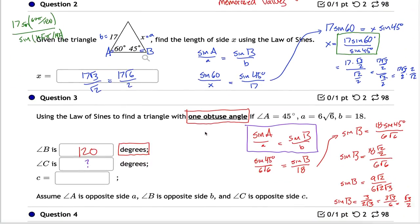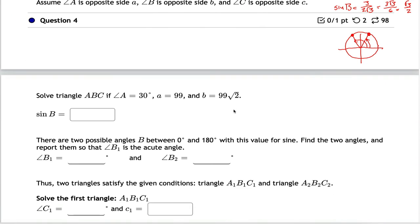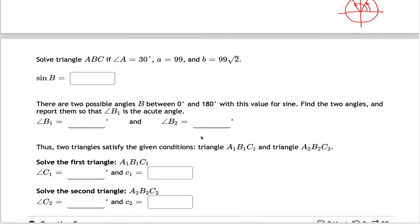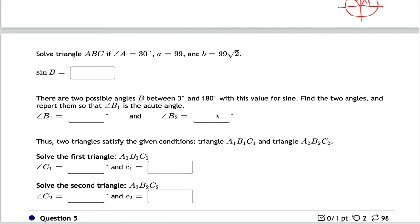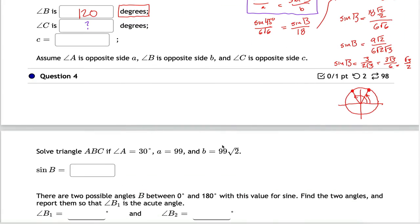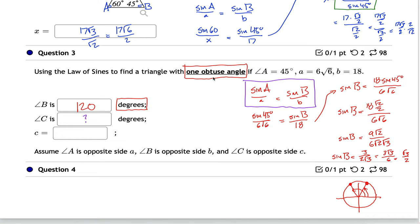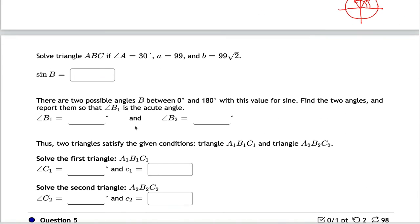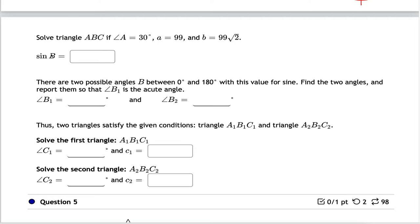Hopefully going through the first few problems in detail means I can skip some of the next ones. Question four should be doable — it follows the steps of question three closely, except instead of just finding the obtuse angle, you identify two possible angles (one acute, one obtuse) and solve the triangle in both cases, finding angle C and side c for each.